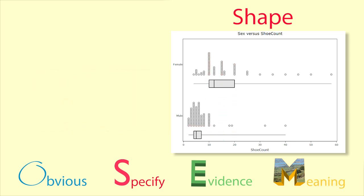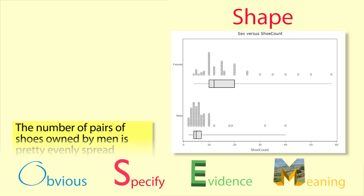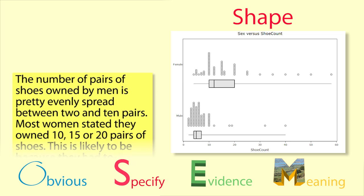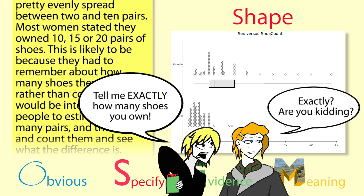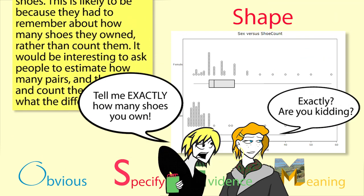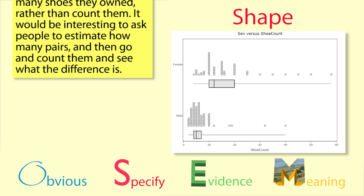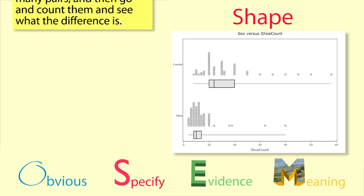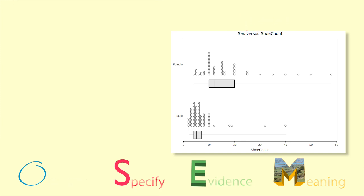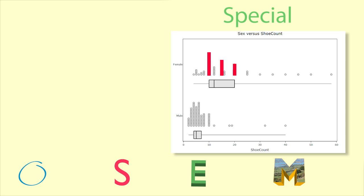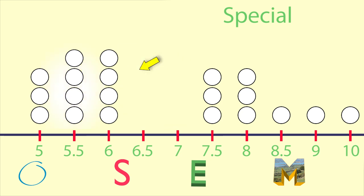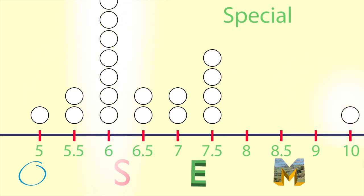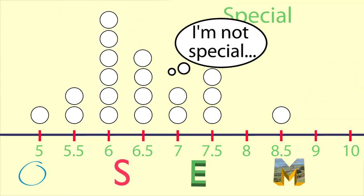Meaning — the number of pairs of shoes owned by men is pretty evenly spread between 2 and 10 pairs. Most women stated they own 10, 15, or 20 pairs of shoes. This is likely because they had to remember about how many shoes they owned rather than count them. It would be interesting to ask people to estimate how many pairs and then go and count them to see the difference. Finally we comment on any special aspects of the graph. We have already commented on the three spikes in the female graph. Special aspects can include gaps, clusters, a tail or skew, spikes, or unusual observations. Sometimes there are no special features for a graph.